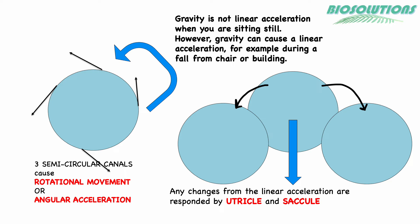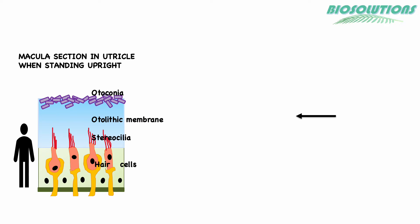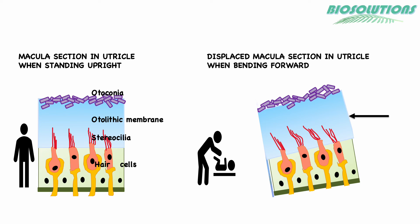When we turn or rotate our head, the endolymph in the semicircular canals also moves with some lag, which exerts pressure deflecting the cupula in the opposite direction. Similarly, the maculae also get stimulated by shearing forces generated between the otolithic membrane and the cilia of the hair cells touching it.